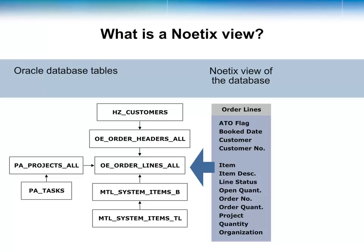The columns of the Noetics view map to the columns of the database tables. The view joins the tables in the proper manner and includes the appropriate business logic to assure the data returned is correct. Finding the data that you need is much easier using Noetics views compared to working directly with the Oracle tables.